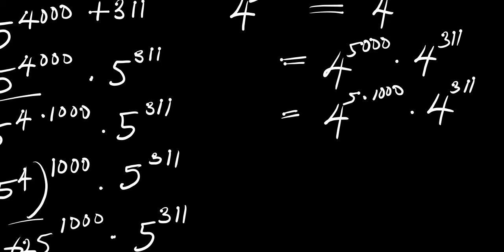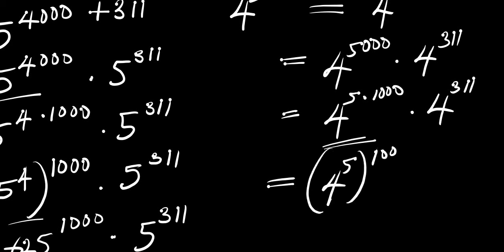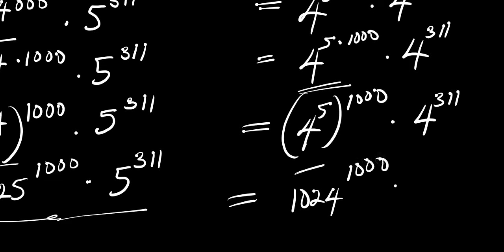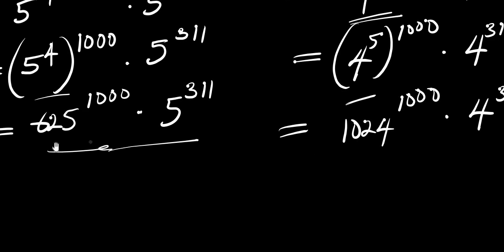We can rewrite this as (4^5)^1000 times 4^311. Since 4^5 is simply 1024, we have 1024^1000 times 4^311. So at this point we are now comparing 625^1000 × 5^311 against 1024^1000 × 4^311.